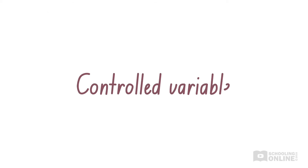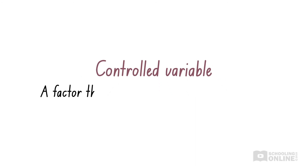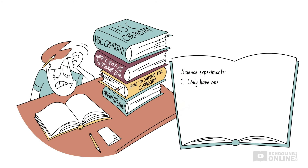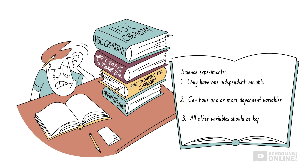Let's move on and discuss controlled variables. A controlled variable is a factor that is kept constant in an experiment. For an experiment to be valid, we should only change one factor at a time. When we change the independent variable to see its effect on the dependent variable, we should keep all other factors that could influence the dependent variable constant. If some other factor is allowed to change, even by a little bit, the results cannot be solely explained by the independent variable, and the validity of the experiment is reduced. In general, you should try to identify as many controlled variables as possible when designing an experiment.